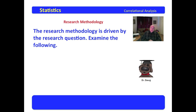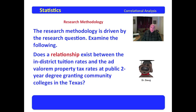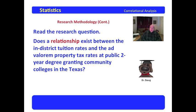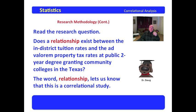The research methodology is driven by the research question. Consider: 'Does a relationship exist between the in-district tuition rates and ad valorem property tax rates at public two-year degree-granting community colleges in Texas?' The key word is 'relationship.' The word 'relationship' lets us know that this is, in all likelihood, a correlational study. There are many ways to analyze things, but when starting out, the word 'relationship' really keys us that it's a correlational study.